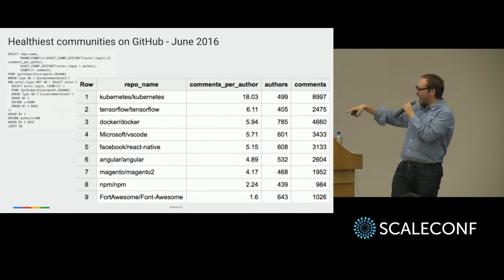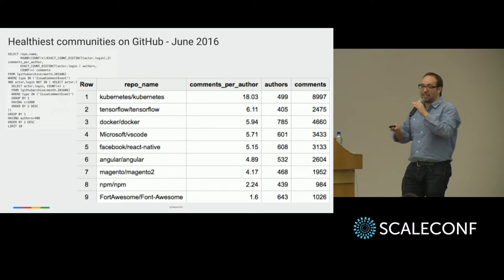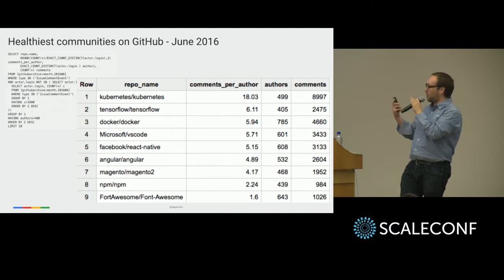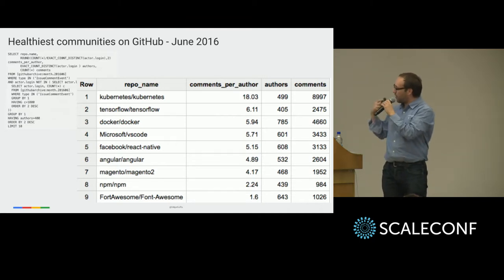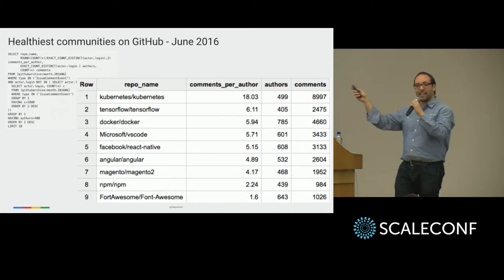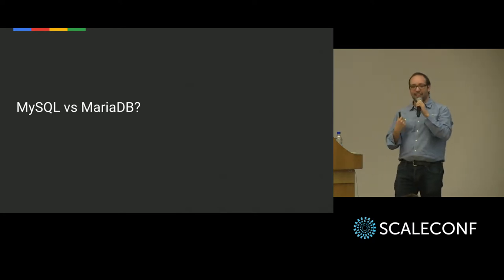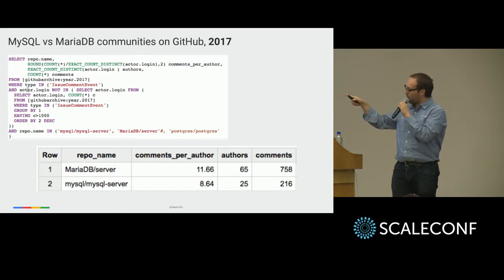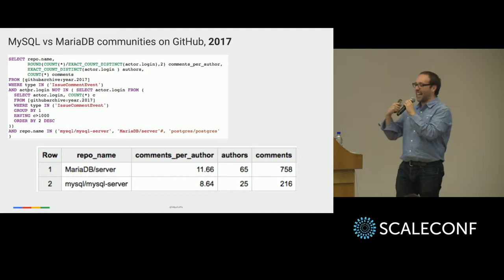On the other extreme, Font Awesome had even more people commenting — more than 600 — but each one left less than two comments. So it's something where people go, write a comment, and never come back again. And I'm pretty proud that Google shows up with Kubernetes, TensorFlow, Angular. Then one team might want to know: which one has a healthier community — MySQL or MariaDB? MariaDB server has a lot more comments per author, more authors, and more total comments than MySQL server. So MariaDB has a healthier community.